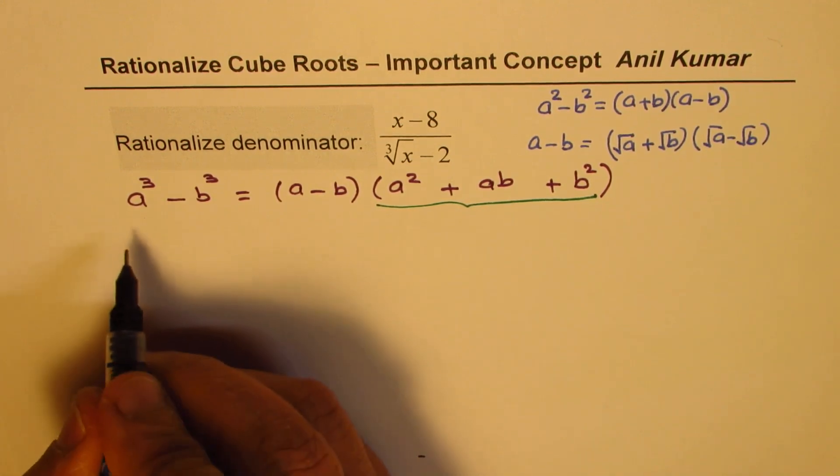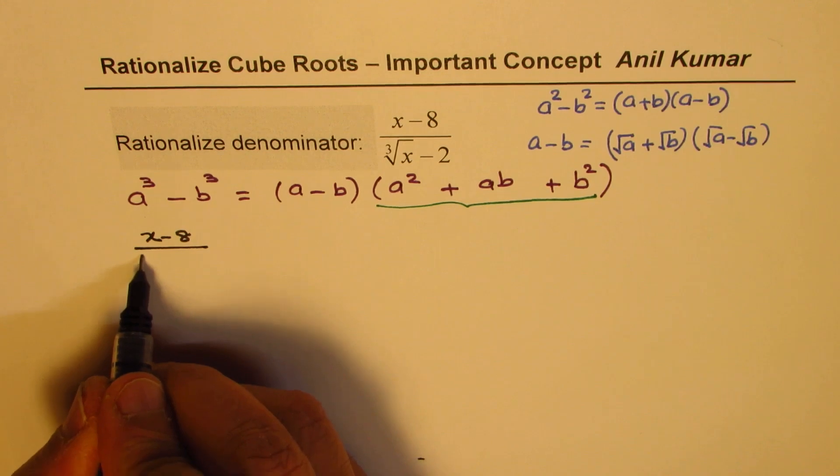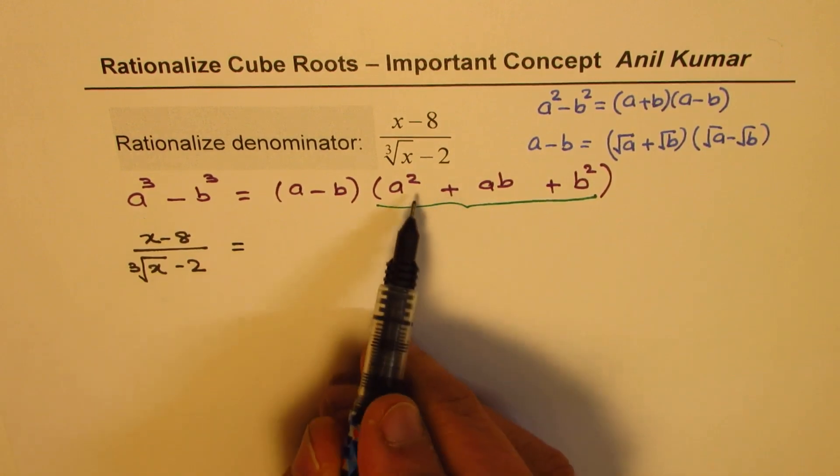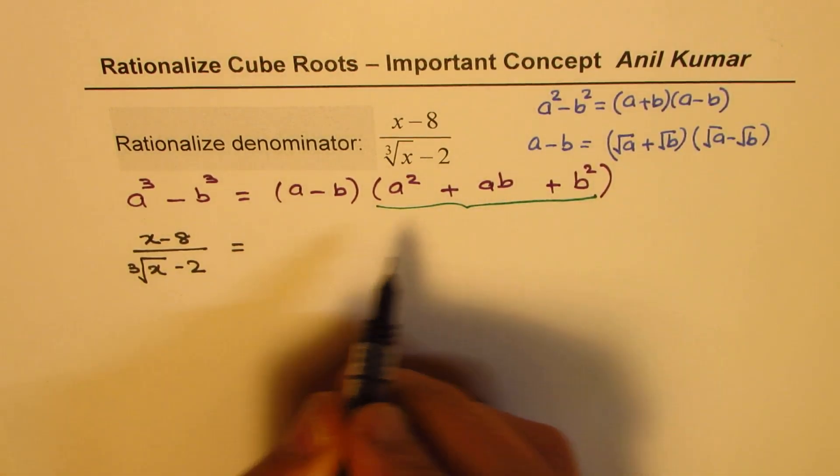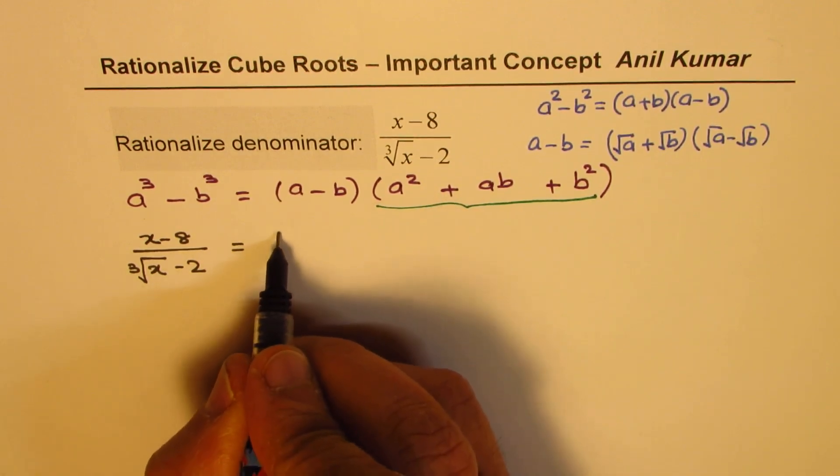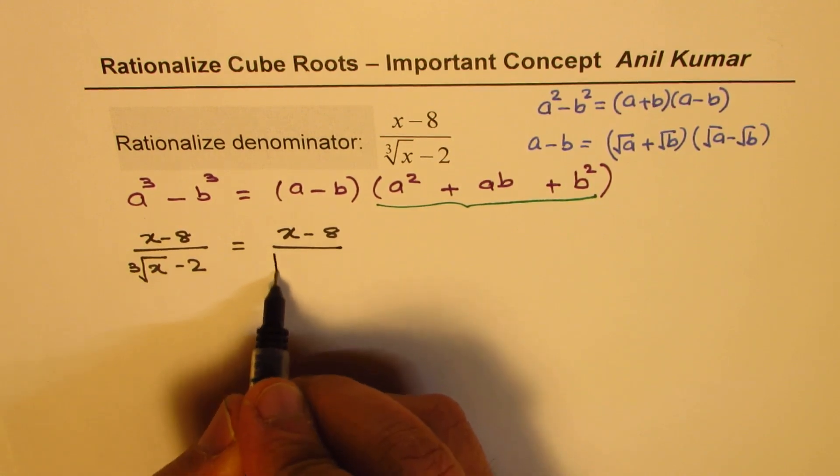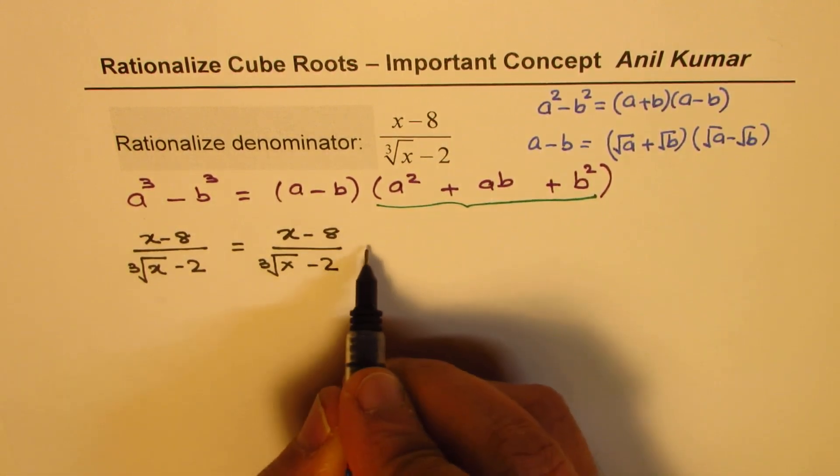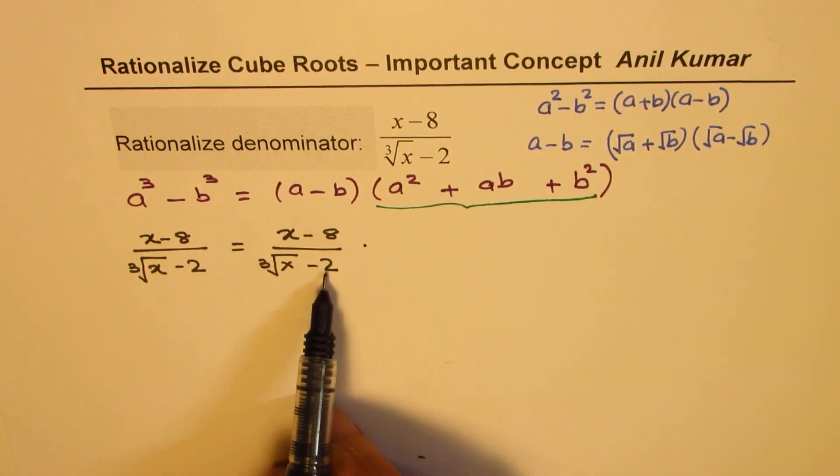We have x minus 8 over cube root of x minus 2. Now, to rationalize, I am going to multiply by a square plus ab plus b square, and also divide by the same factor. So, we have x minus 8 in the numerator, divided by cube root of x minus 2.